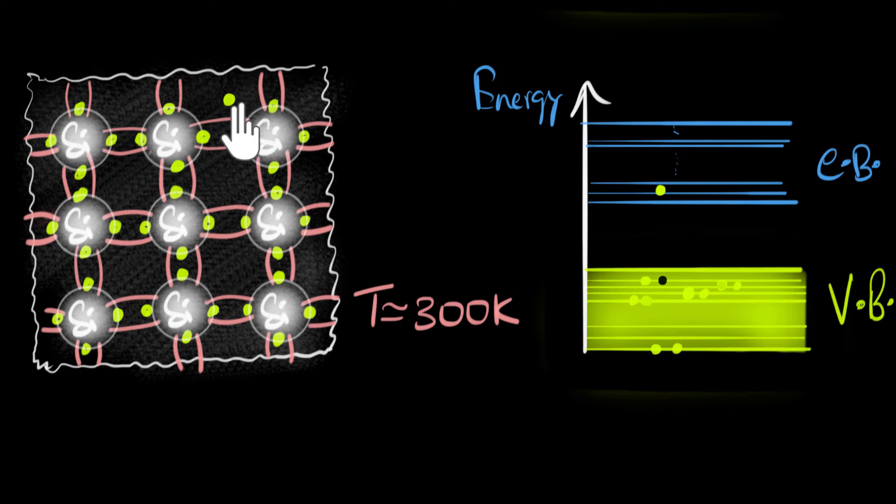And notice, not only did we get a free electron, but because that electron, now imagine that electron moves away somewhere. And because of that, notice there is a vacant space available. In the valence band, this state is now free, free for some other electron to come and occupy. And because there's a lot of thermal agitation, maybe this electron goes and occupies that.